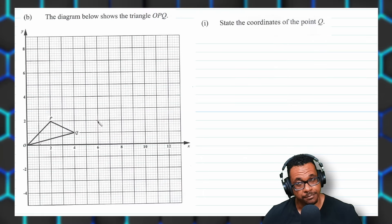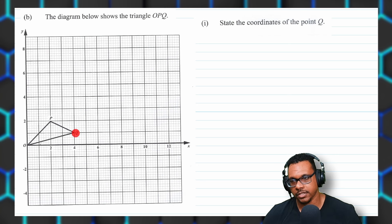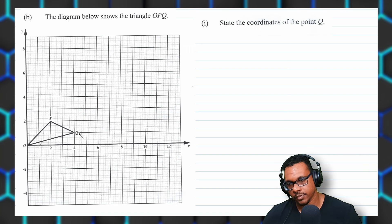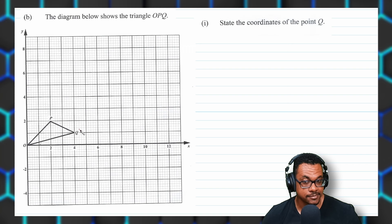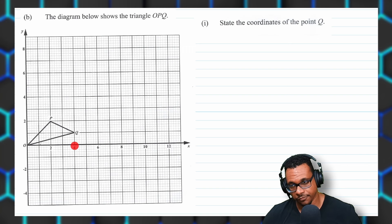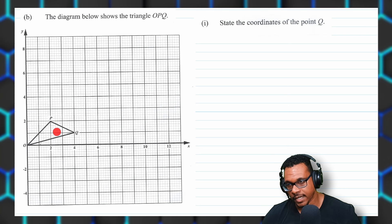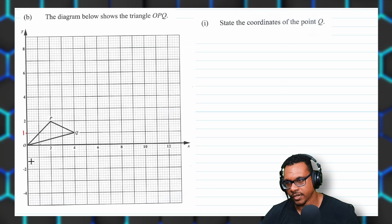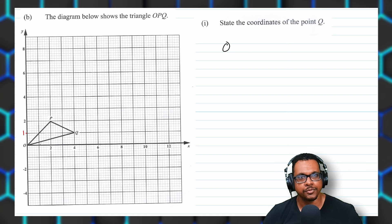For question three, part B: we have triangle OPQ. For the first part, state the coordinates of point Q. Locating Q on the diagram — X first, then Y — we see 4 on the X axis. On the Y axis, between 0 and 2, the midpoint is 1. So Q has coordinates (4, 1).